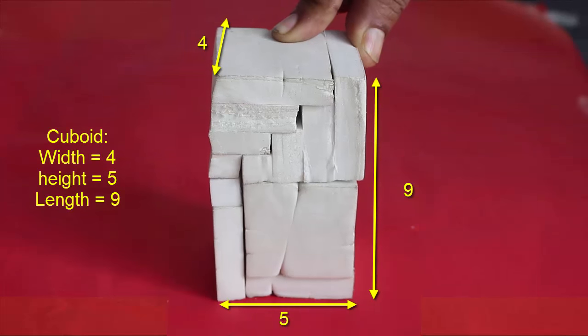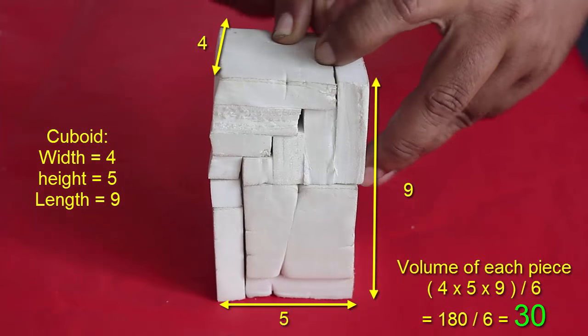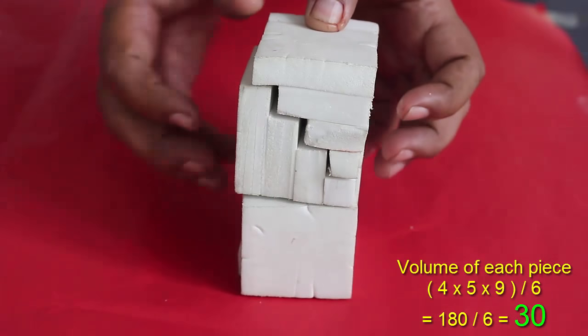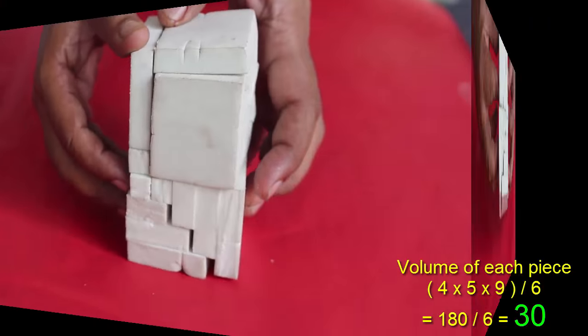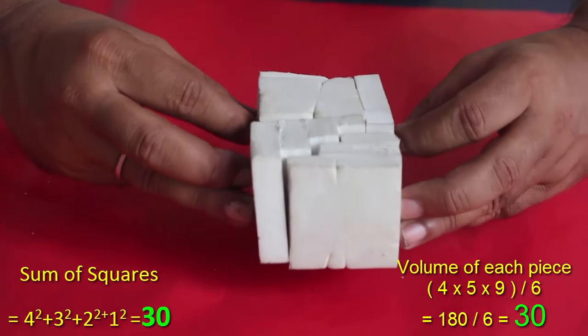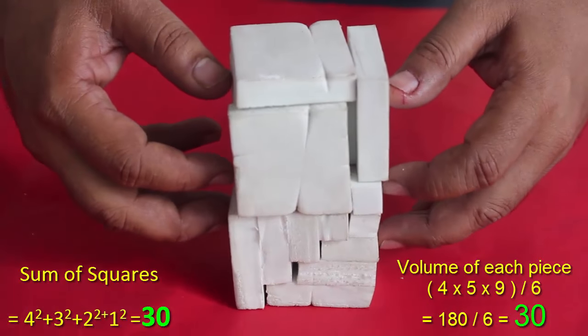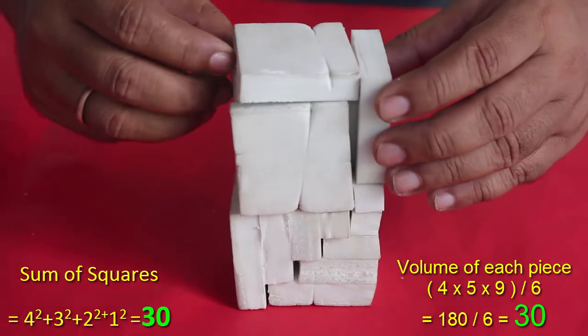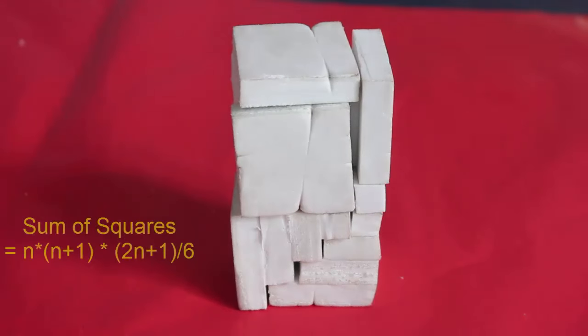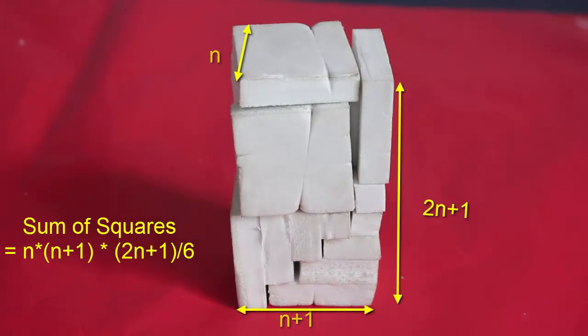Three sides of these cuboids are 4, 5 and 9. So the volume of each piece will be the volume of the whole cuboid divided by 6, or the sum of squares will be this volume of this cuboid divided by 6. And so this is how we can find the formula for the sum of squares by solving this puzzle.